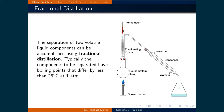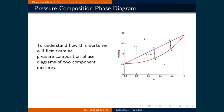This process is commonly used in petrochemical refining and air separation to produce liquid oxygen, liquid nitrogen, and argon. To understand how this works we will first examine pressure-composition phase diagrams of two-component mixtures.